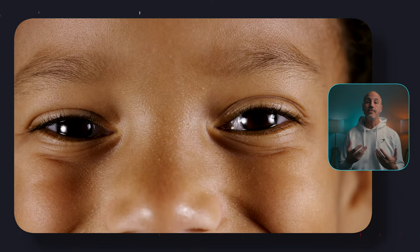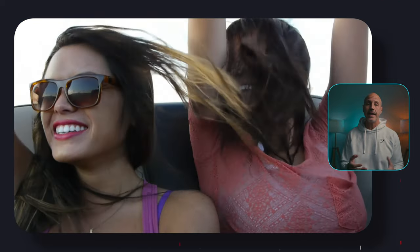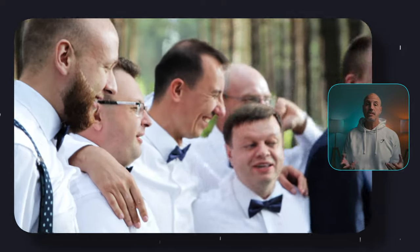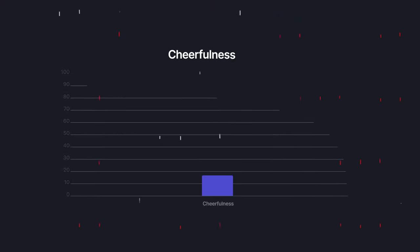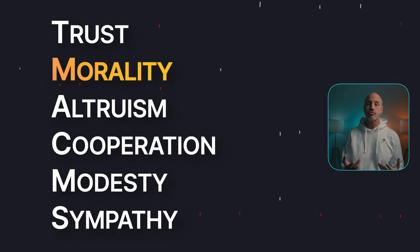Cheerfulness measures positive moods and feelings, not negative emotions. People that are high in cheerfulness experience a range of positive feelings — for example, happiness, enthusiasm, optimism, and joy. Low scorers are not as prone to such energetic high spirits. Agreeableness is made up of the categories: trust, morality, altruism, cooperation, modesty, and sympathy.